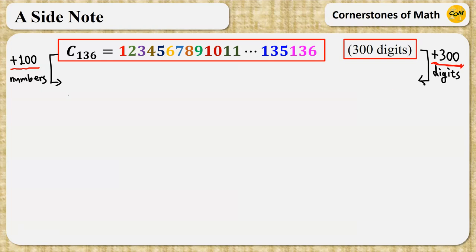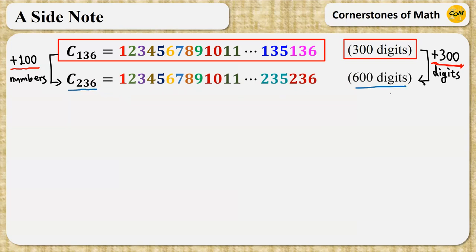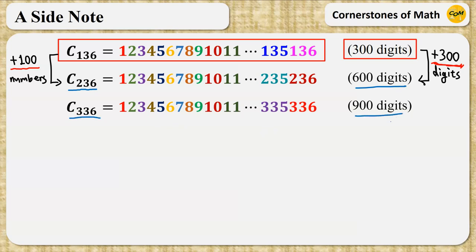For example, writing 100 more numbers, C236 is a 600-digit number, and C336 is a 900-digit number.